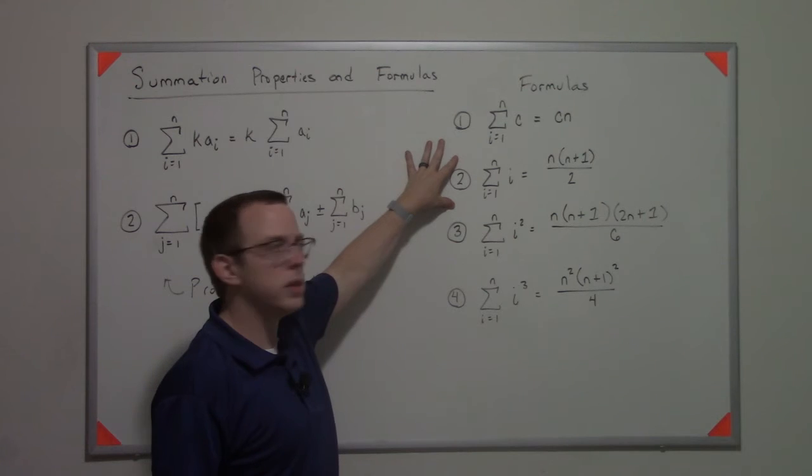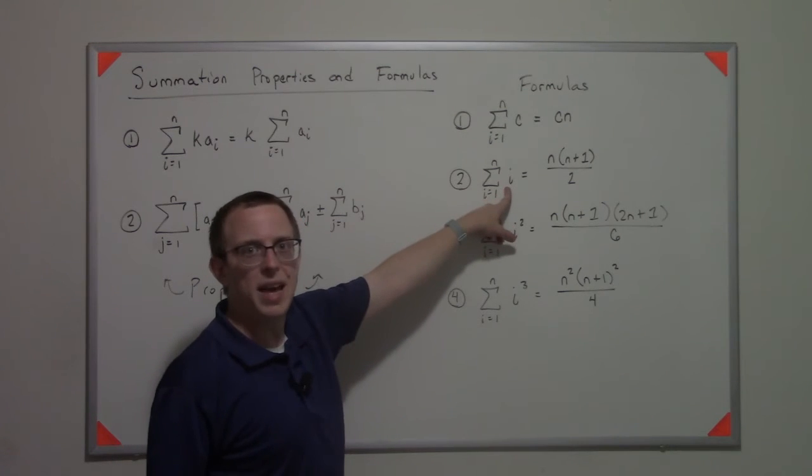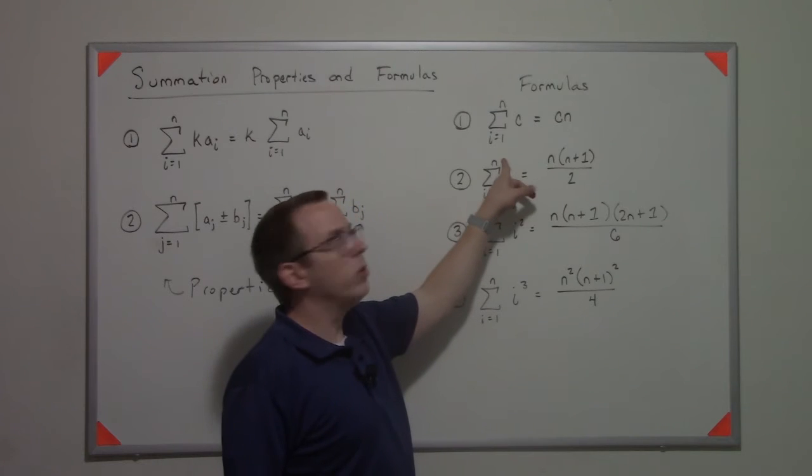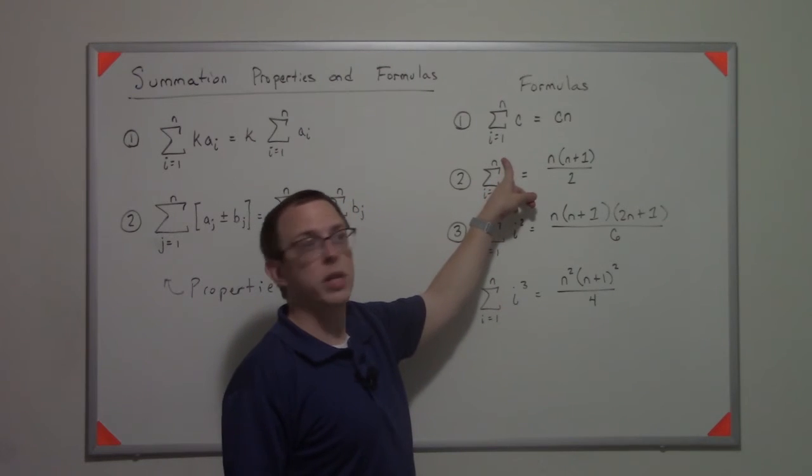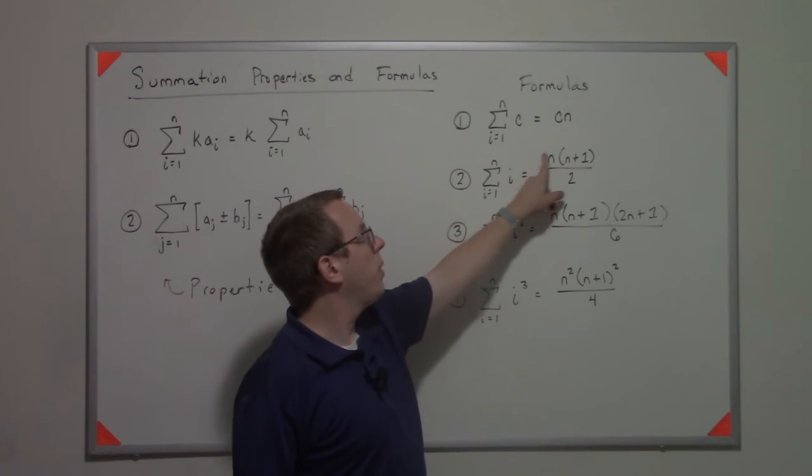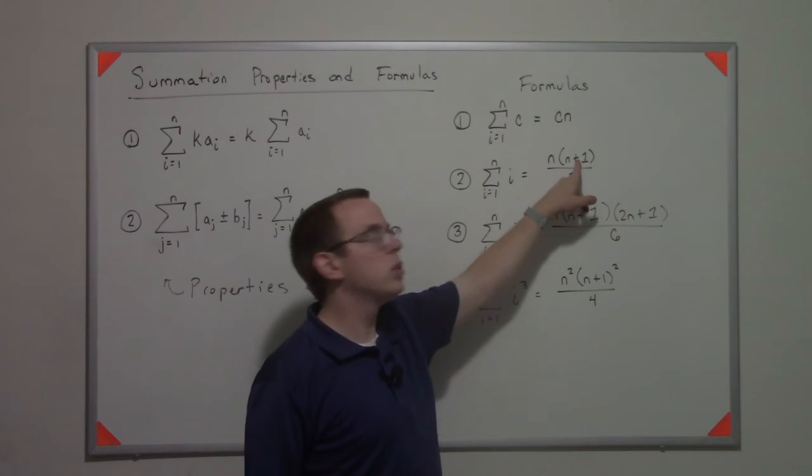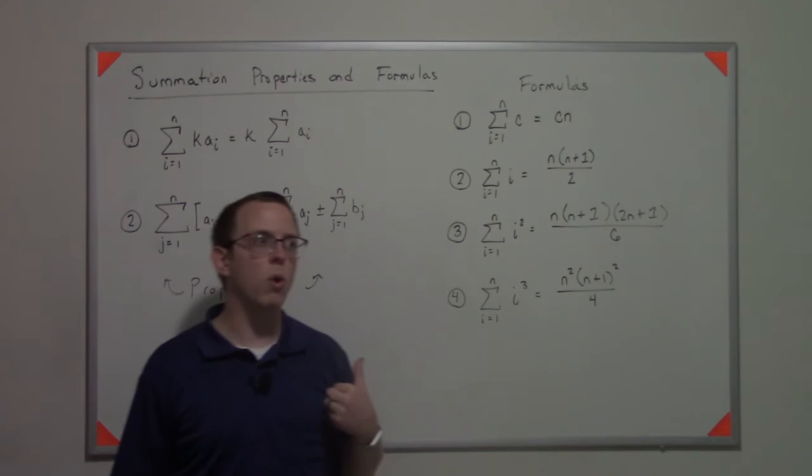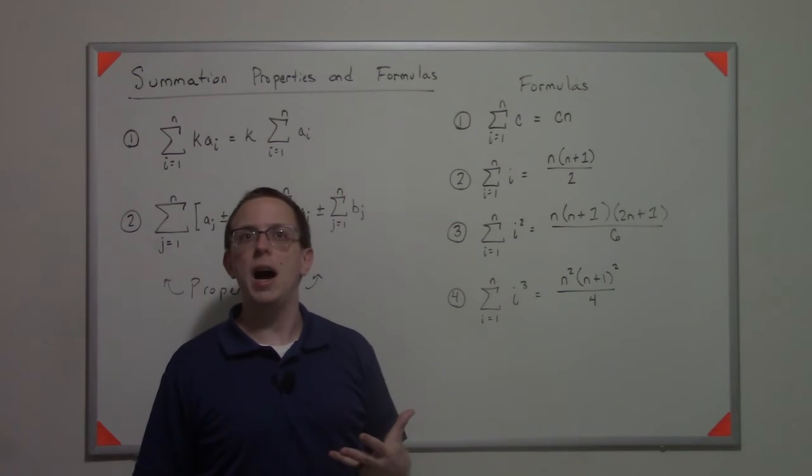This one's a little more complex. If we sum up the index from one to n, you actually get this formula. It's the upper bound times the upper bound plus one over two. I recommend you go try this, for like five, for instance.